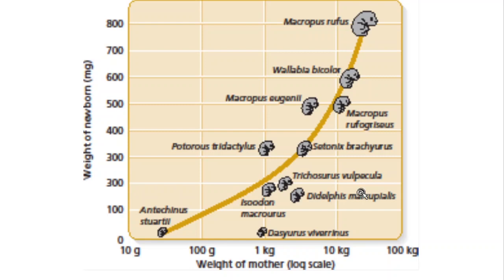We talked about what the advantages of that might be. One advantage is that the female has the ability to remove the offspring from the nipple and try again with another pregnancy. Remember they have delayed implantation, so if times get tough and they don't think they can make it, they can get rid of the offspring, stop spending energy on it, and they already have a new one ready to go.